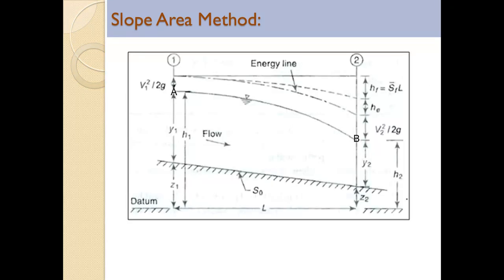A stretch of river is selected and two gauges are established at a certain distance apart. Here you can see the stretch of the river — L is the length of the stretch, this is the bed slope, and this is the datum. The elevation of the upstream and downstream beds are shown; y1 is the depth of water upstream and y2 is the depth downstream. A is the water surface elevation at section one and B at section two.